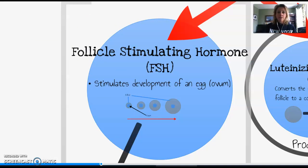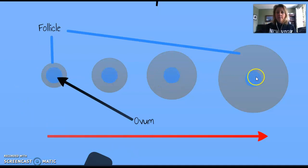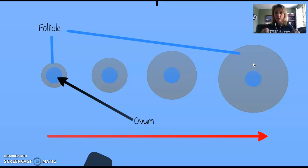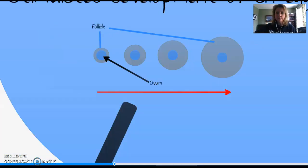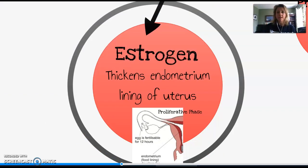As mentioned, follicle-stimulating hormone stimulates the development of the follicle that surrounds the oocyte. As time goes on, that follicle is getting bigger and bigger, due in part to the fluid accumulating inside of it. FSH produces this follicle, which produces estrogen. As the follicle gets bigger, it secretes more and more estrogen, and the estrogen is responsible for thickening the endometrial lining of the uterus.